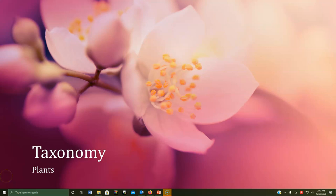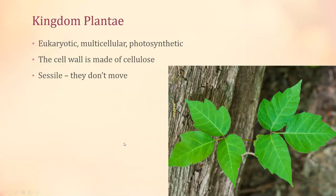This week in lab we're doing the second chapter of taxonomy. Everything today is in the domain Eukarya — complicated cells, large cells, they have a nucleus and all those other membrane-bound organelles. Everything today is also in the same kingdom: Kingdom Plantae. So what makes a plant a plant? All plants are eukaryotic and multicellular.